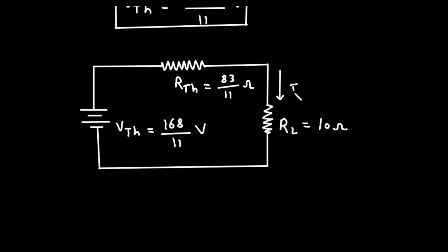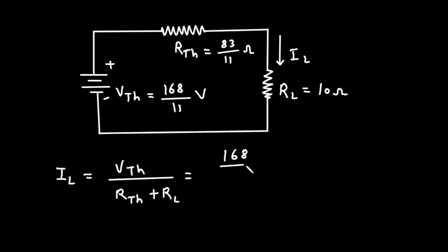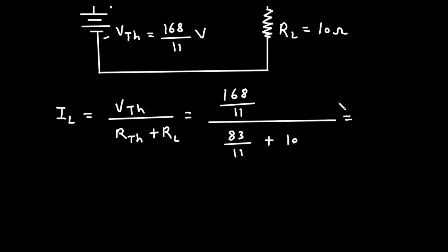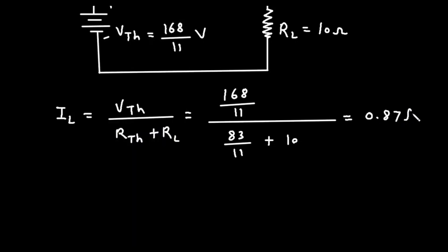Now we can easily find the value of IL. Since this is positive and this is negative, the current will flow in this direction. IL is equal to VTH divided by (RTH + RL). The value of VTH is 168/11, divided by (83/11 + 10), which equals 0.87 ampere. So IL is equal to 0.87 ampere.